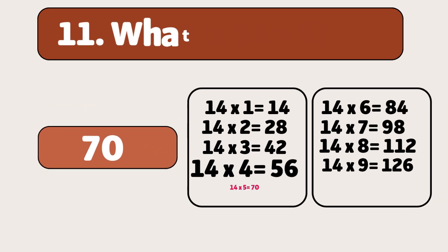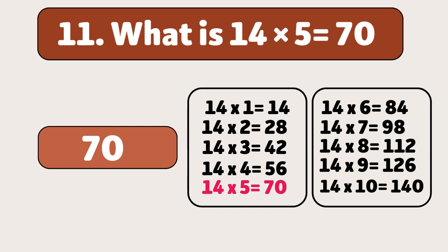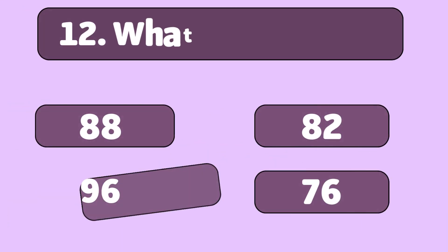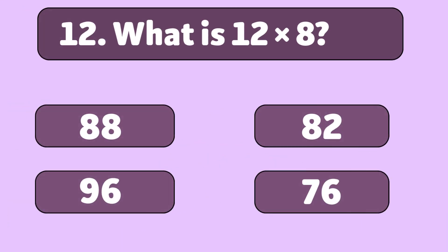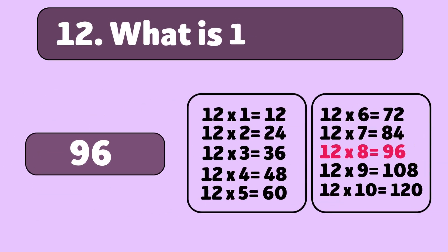Seventy. 14 times 5 is equal to 70. 12 times 8 is equal to 96. 12 times 8 is equal to 96.